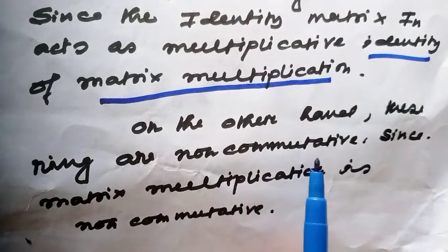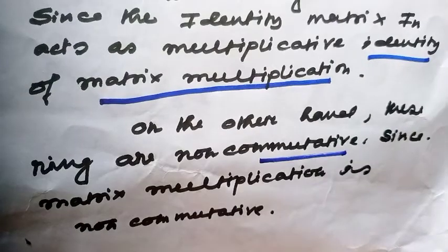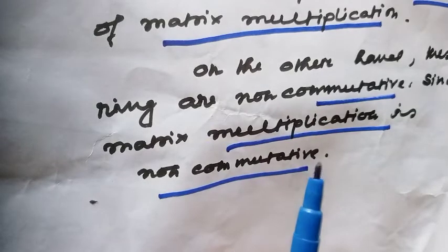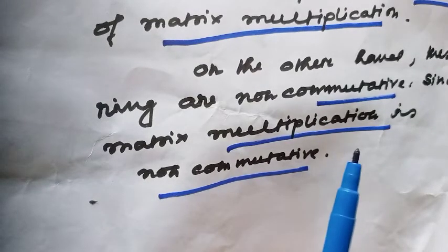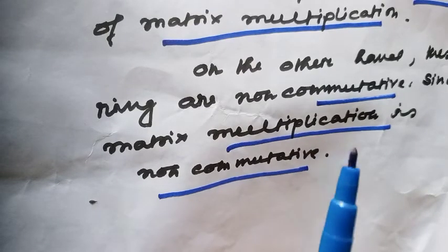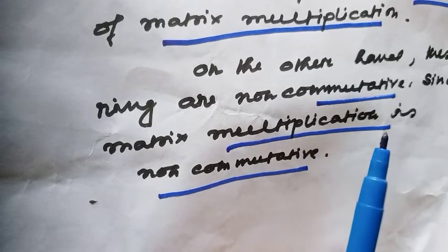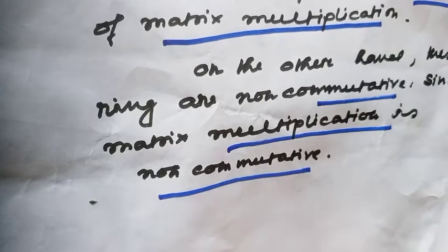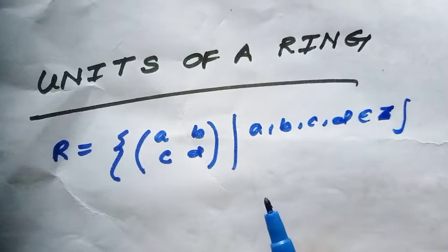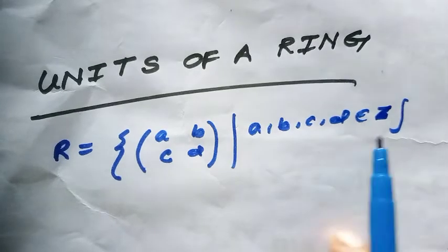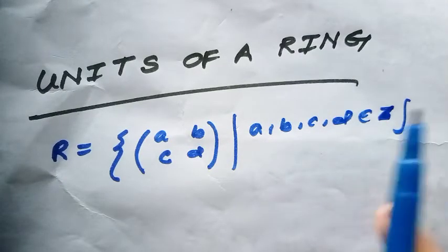On the other hand, these rings are non-commutative rings since matrix multiplication is non-commutative. When we say a ring is non-commutative or commutative, we are describing the multiplication of the ring, because the addition is always commutative.